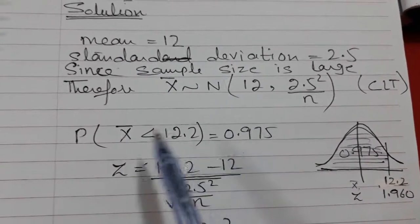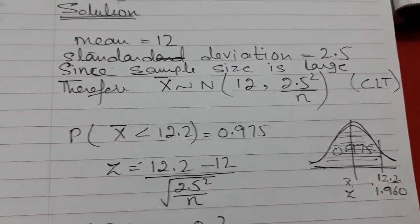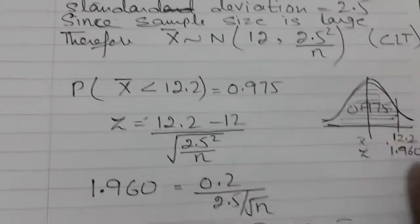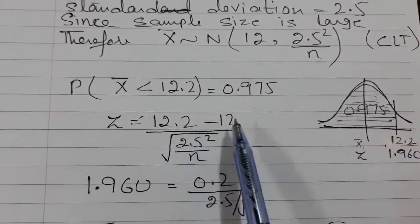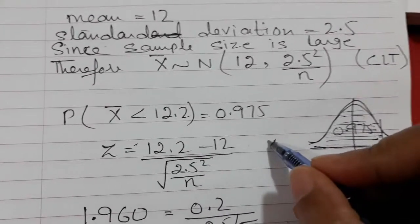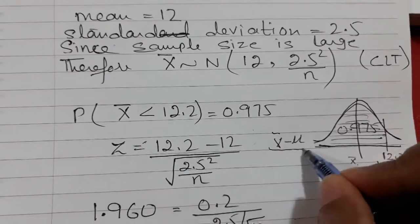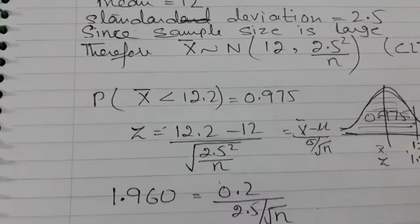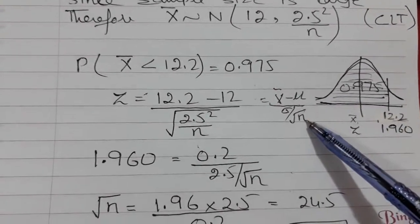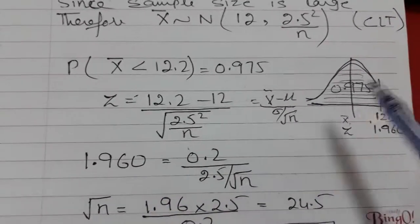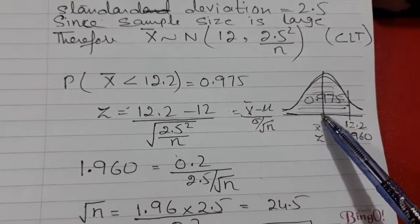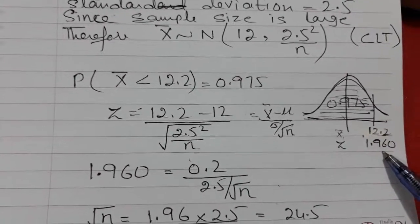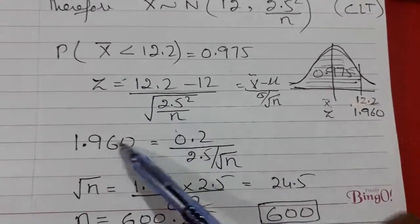Now change the sample mean into standardized form Z. Z equals X-bar minus mu over sigma over root n. Substituting the values — n is unknown but the rest are known — and the Z value for probability 0.975 is 1.960, which you can read from the table. Substituting all values and calculating gives the answer 600.25.